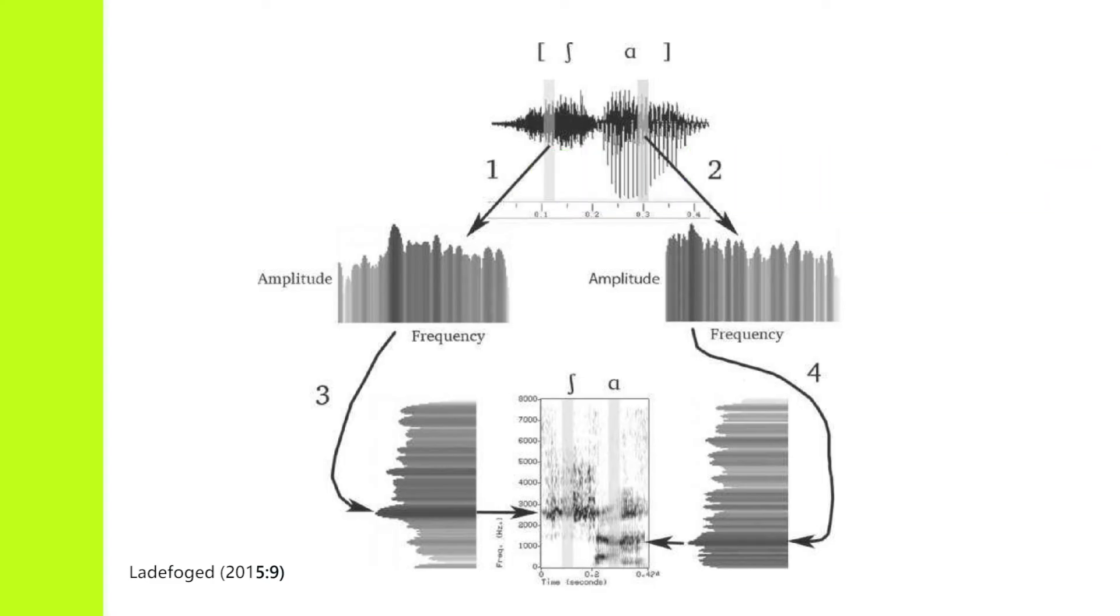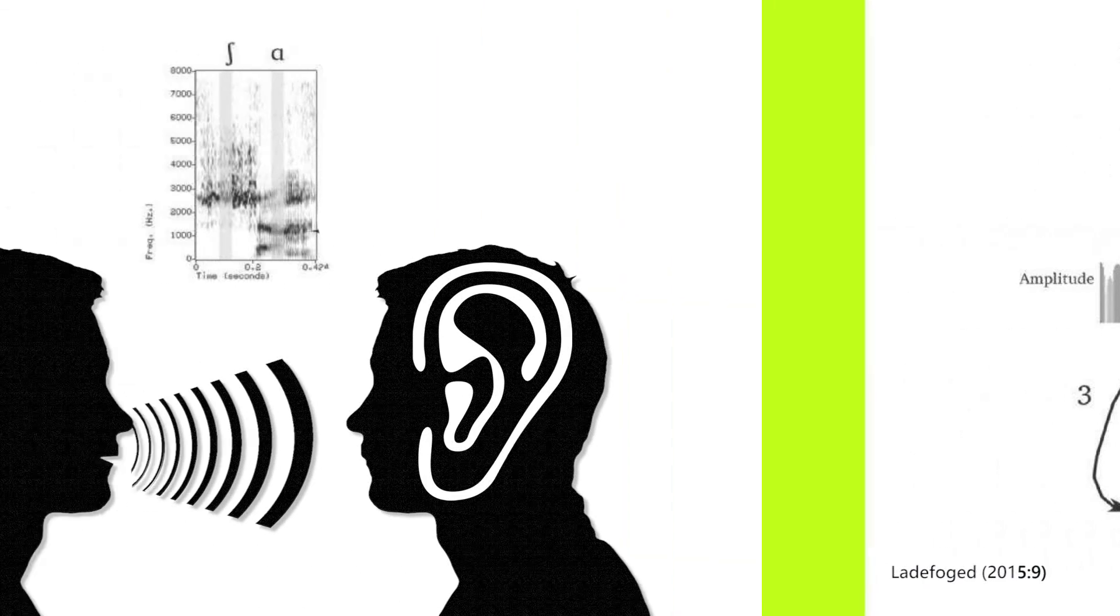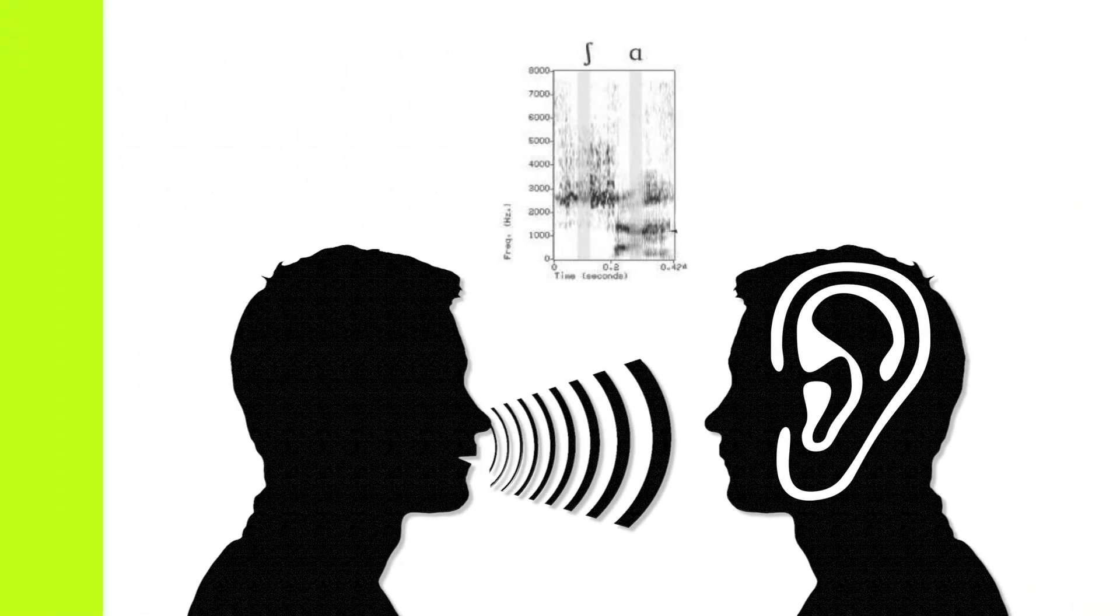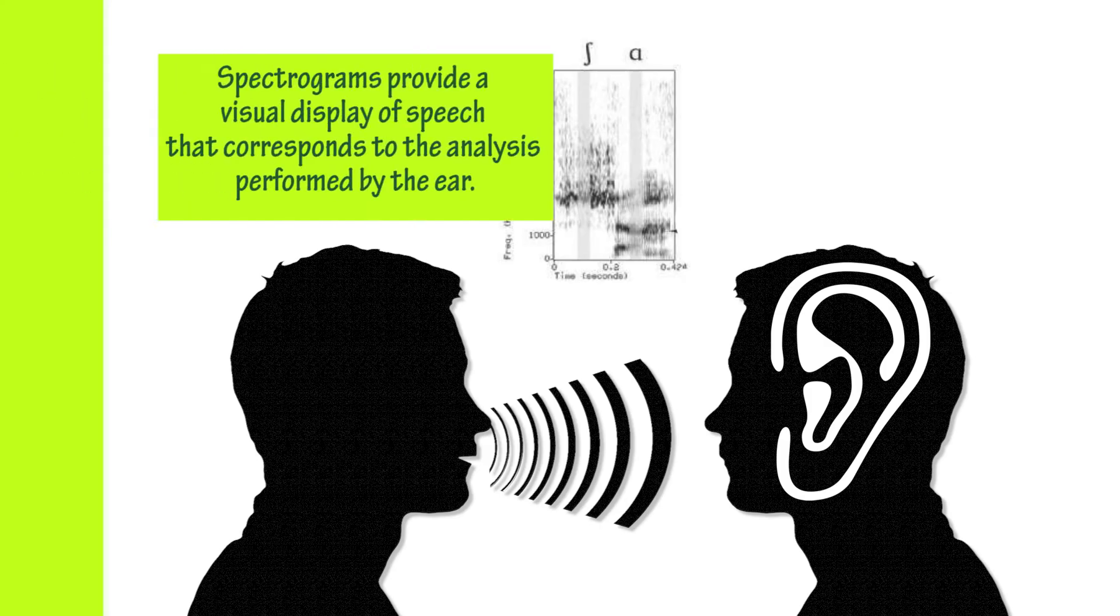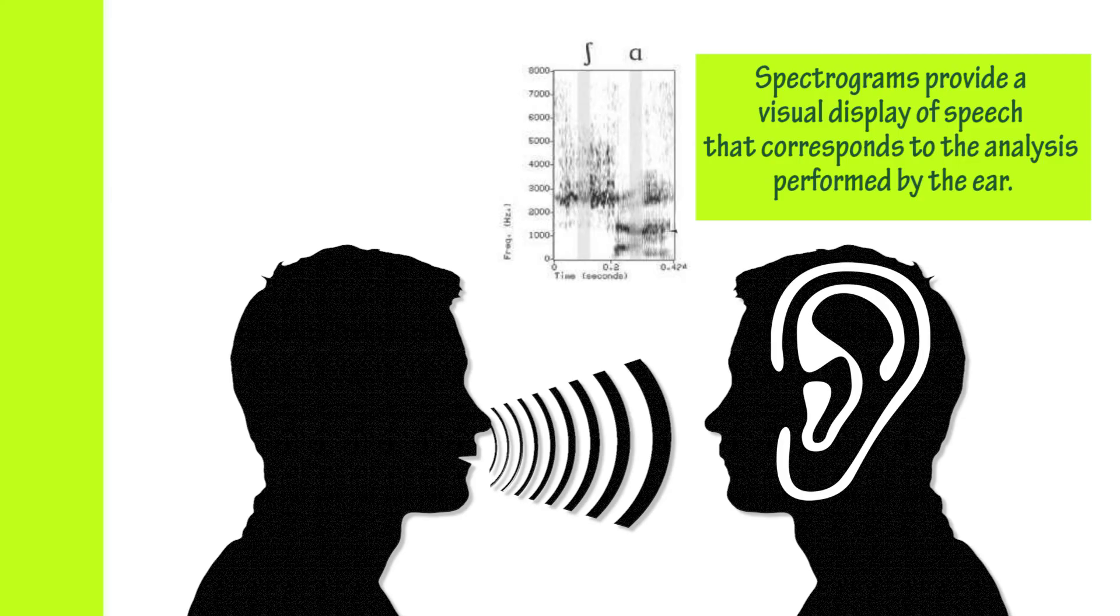Spectrograms are especially important—they're very informative and useful—primarily because they provide a visual display or translation of how our ear actually processes speech. They correspond to the analysis performed by the ear.